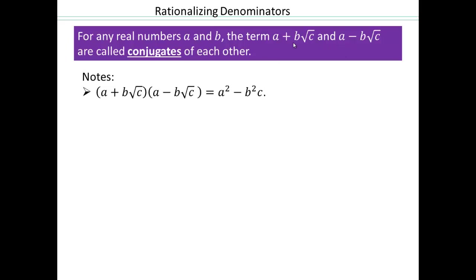Look what happens when you multiply the two conjugates. Doing term-by-term multiplication: a times a is a squared; a times negative b square root c is negative ab square root c; positive ab square root c cancels with the previous term. Then b times b is b squared, and square root c times square root c is c. So when conjugates multiply, the radical sign disappears.